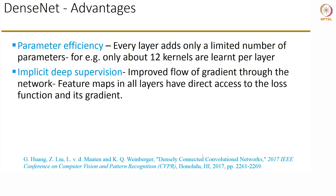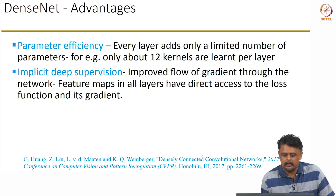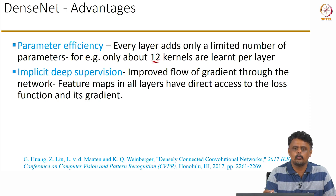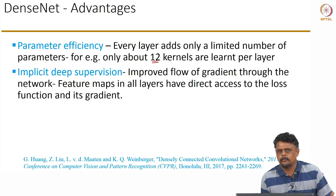The following advantages were proposed by the authors for DenseNets. First, parameter efficiency: because the number of output feature maps per layer is fixed, only very few kernels are learned per layer — for example, about 12 kernels in one architecture, with others suggesting 24 or 32 kernels per layer.